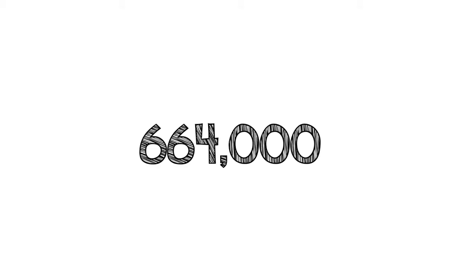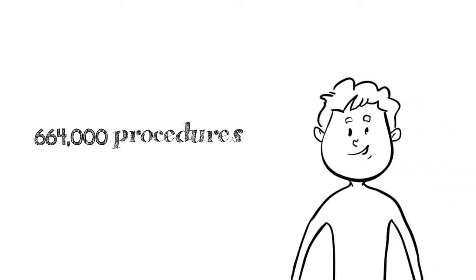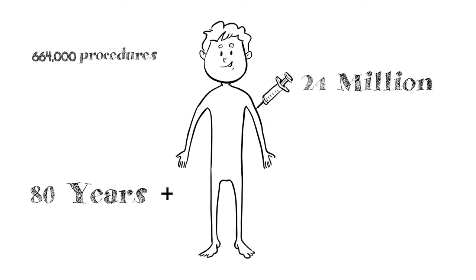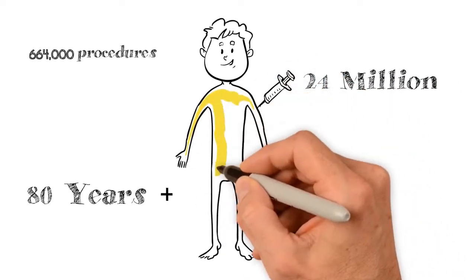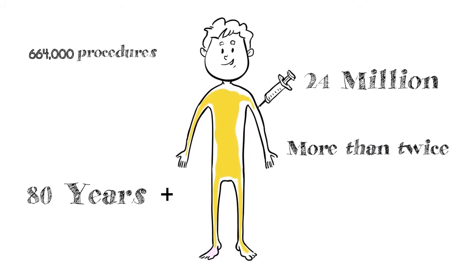With more than 664,000 nuclear medicine procedures done in Australia each year, a population of 24 million people, and an average life expectancy beyond 80 years, the average Aussie will have a nuclear medicine procedure every 36 years. That's more than two in the average lifespan. It's not as common as paracetamol, but you get my drift.